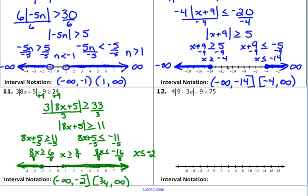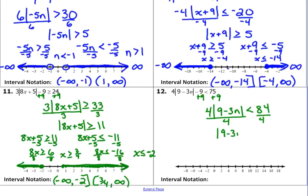Last one — y'all are going to walk me through this one. Add 9. So it's less than 84. Divide by 4 — less than 21. Two cases: first case, we don't change anything: 9 minus 3n less than 21. KISS for the second case: 9 minus 3n greater than negative 21.